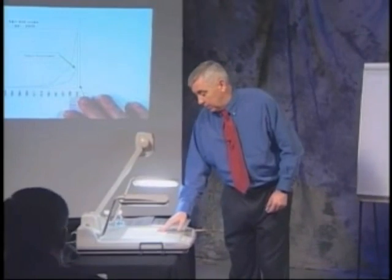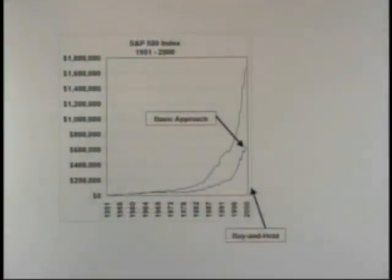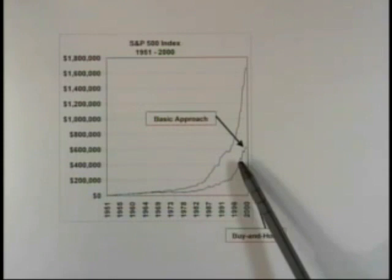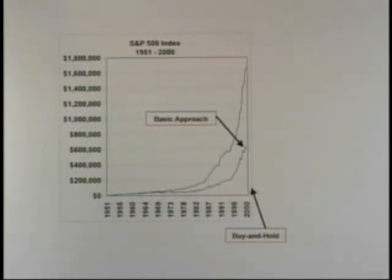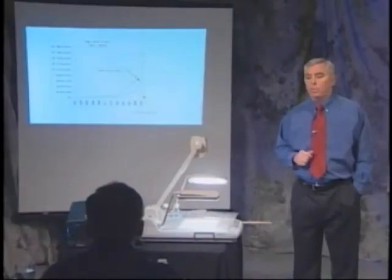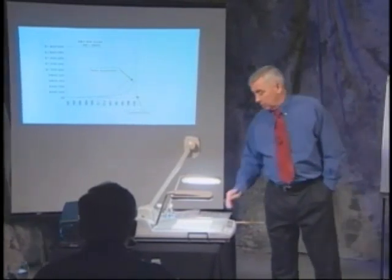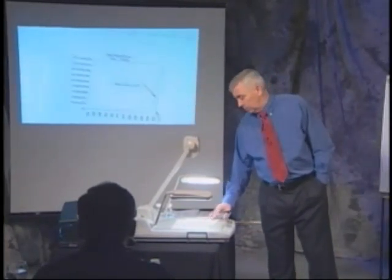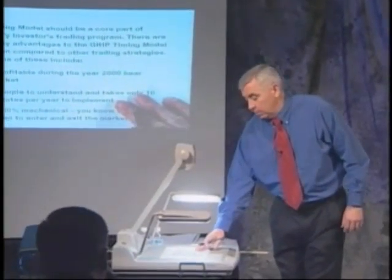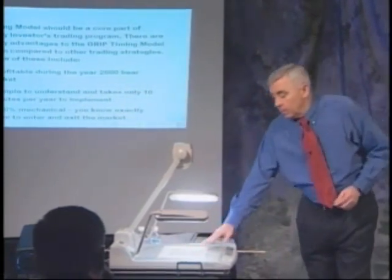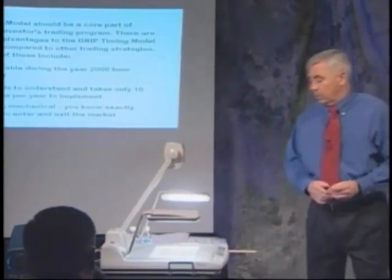Here's the growth of $10,000 in the S&P index over the same period, 1950 to 2000, entering at the end of October and exiting at the end of April. By using this timing model, you get about three to four times the profit compared to if you just bought the index and held it for the whole period. It's definitely worth timing it during this seasonal period.